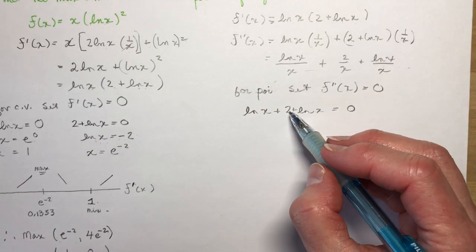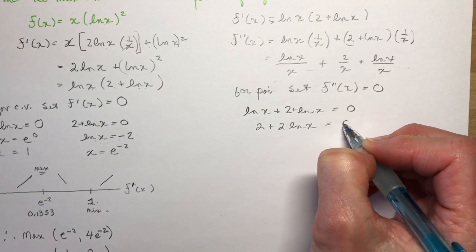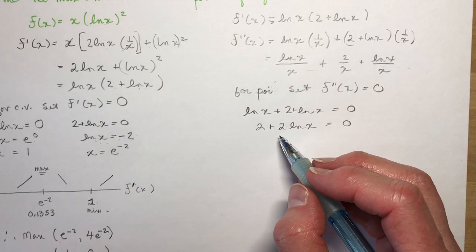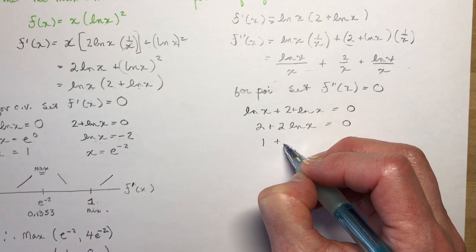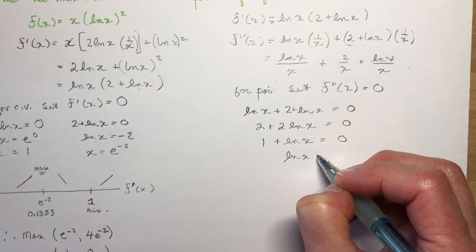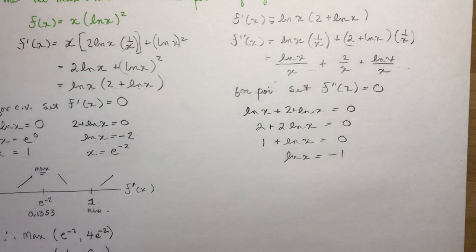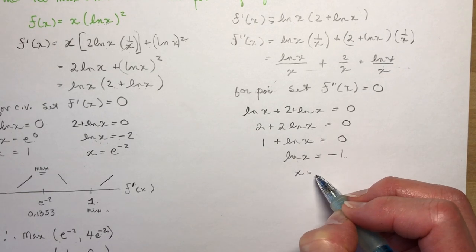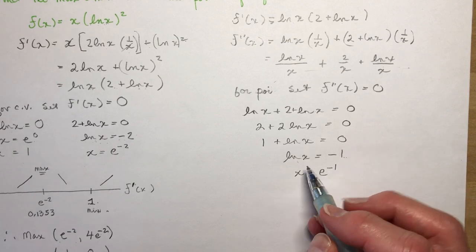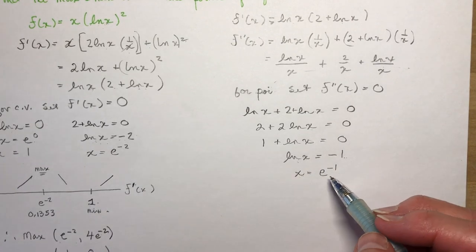Dividing by 2 gives 1 + ln x equals 0, so ln x equals −1, meaning x equals e to the −1, or 1 over e. Don't leave it as ln x equals −1 — solve for x to get x equals e to the −1.